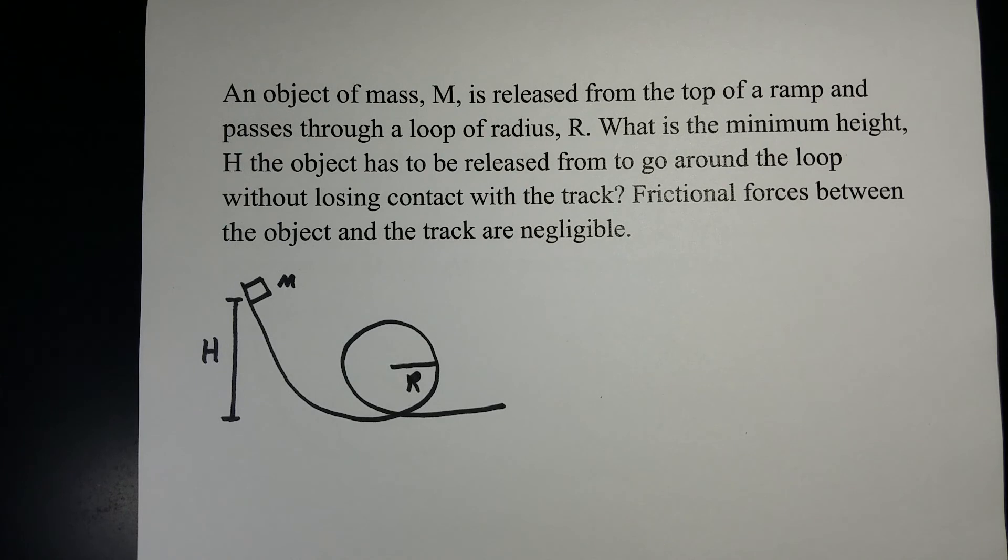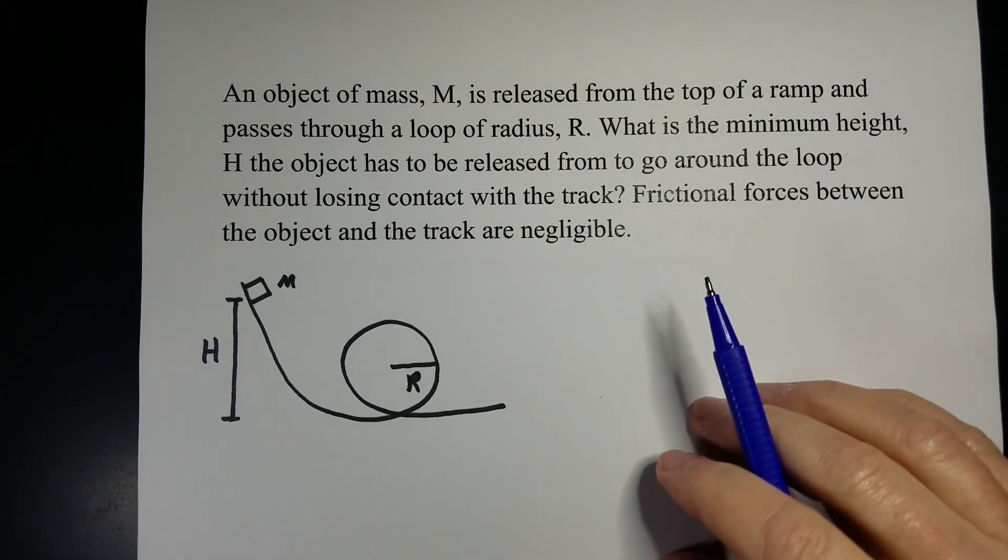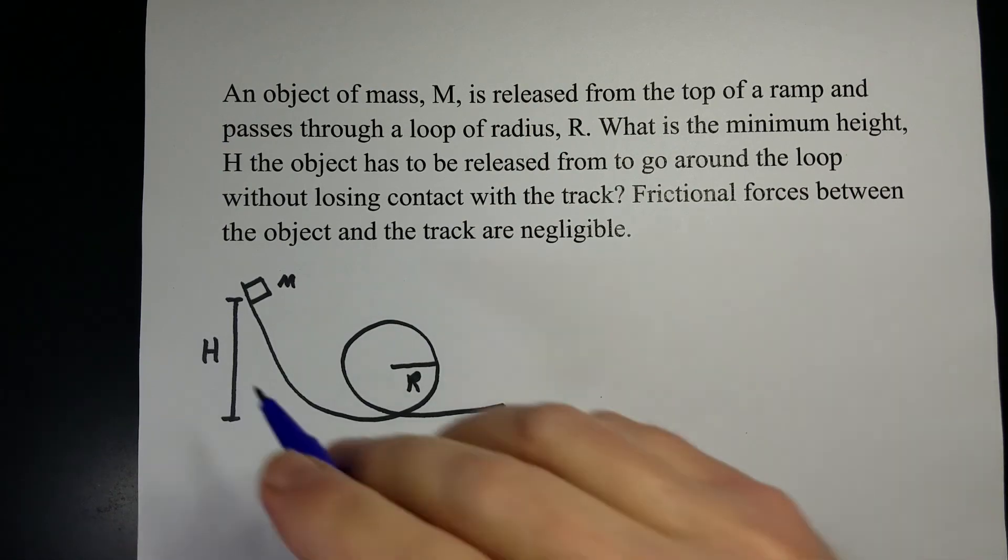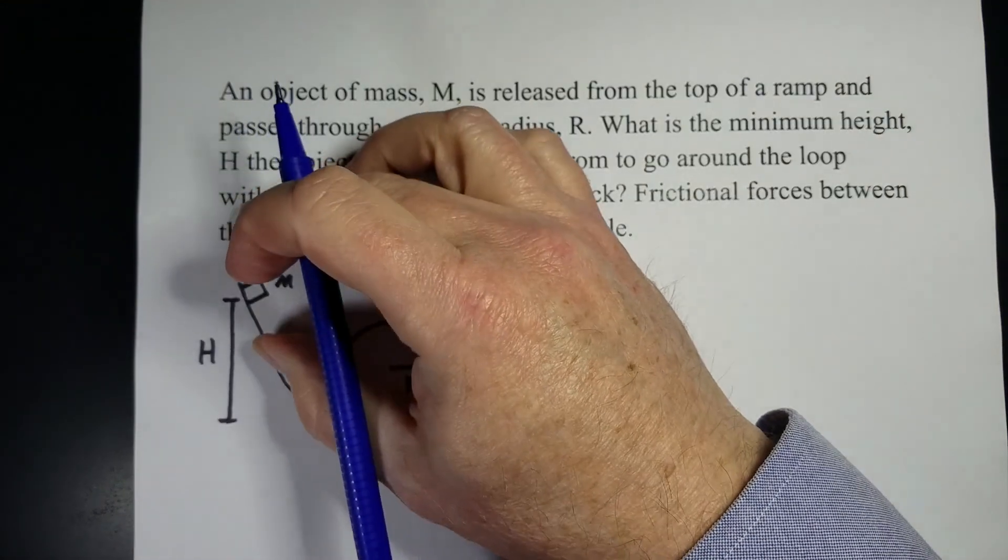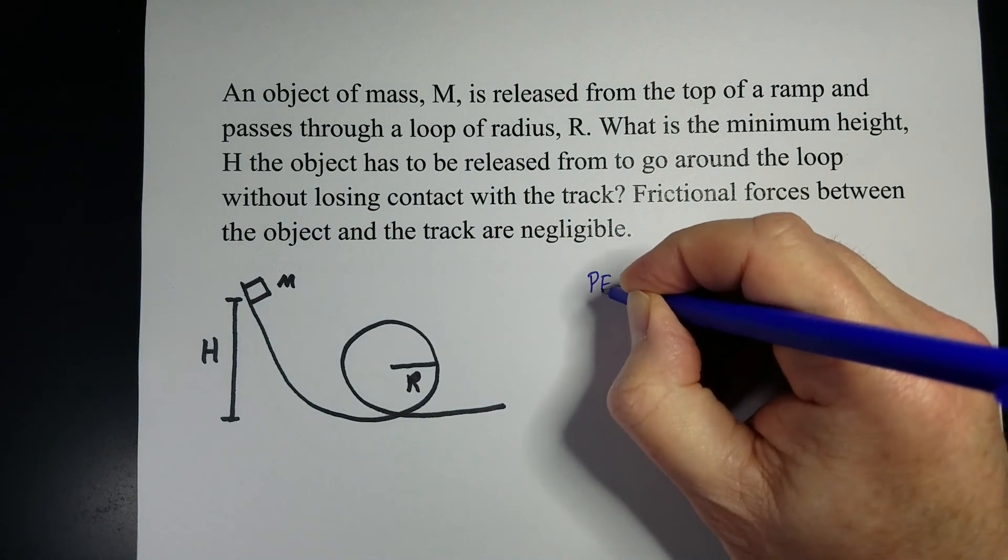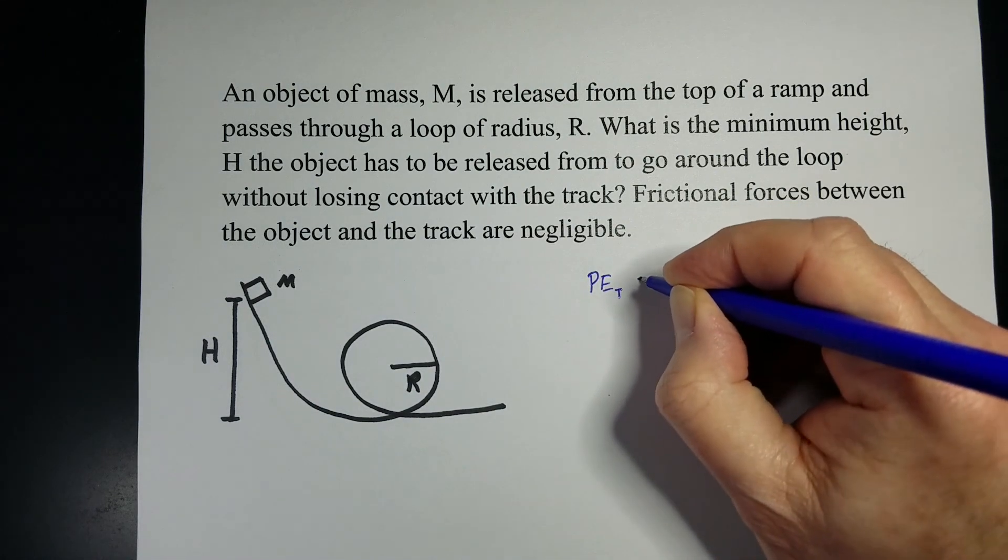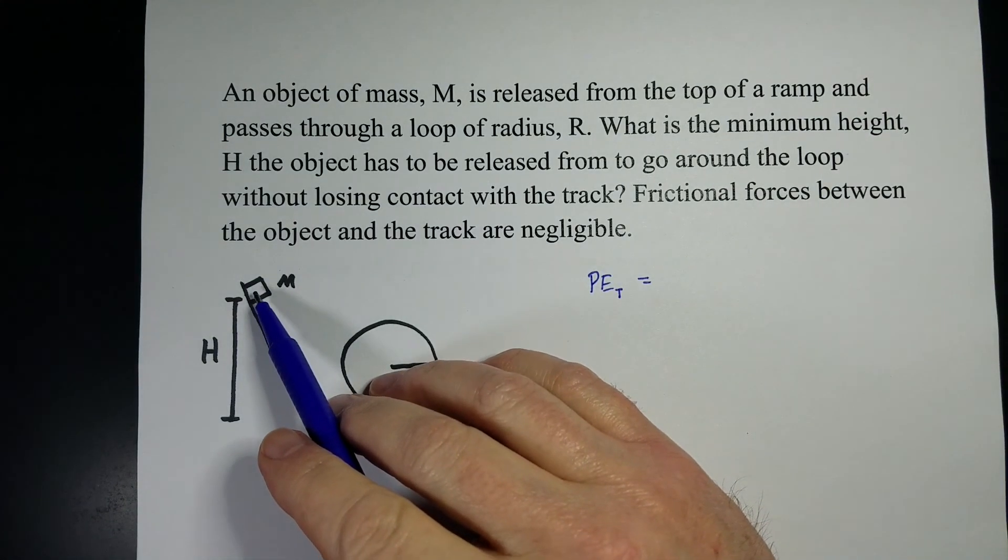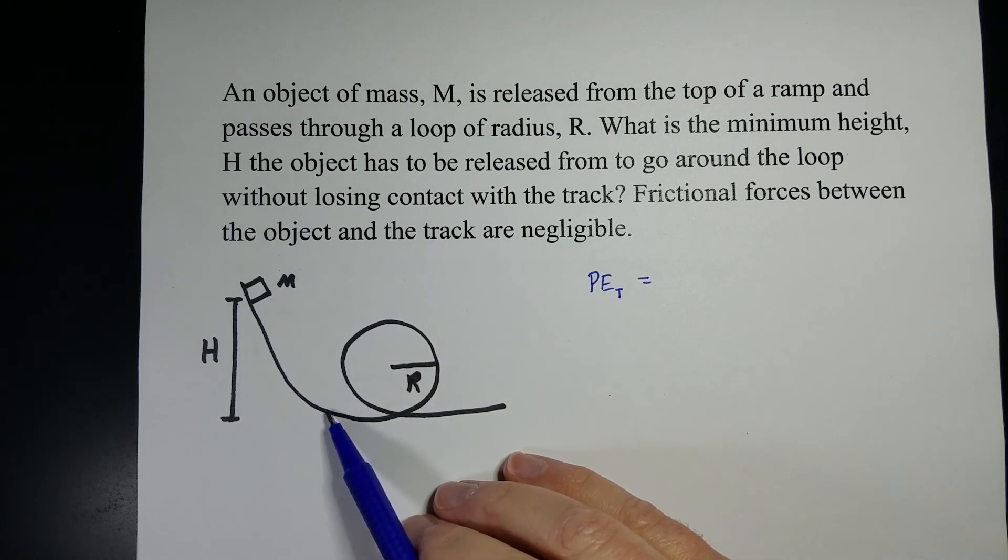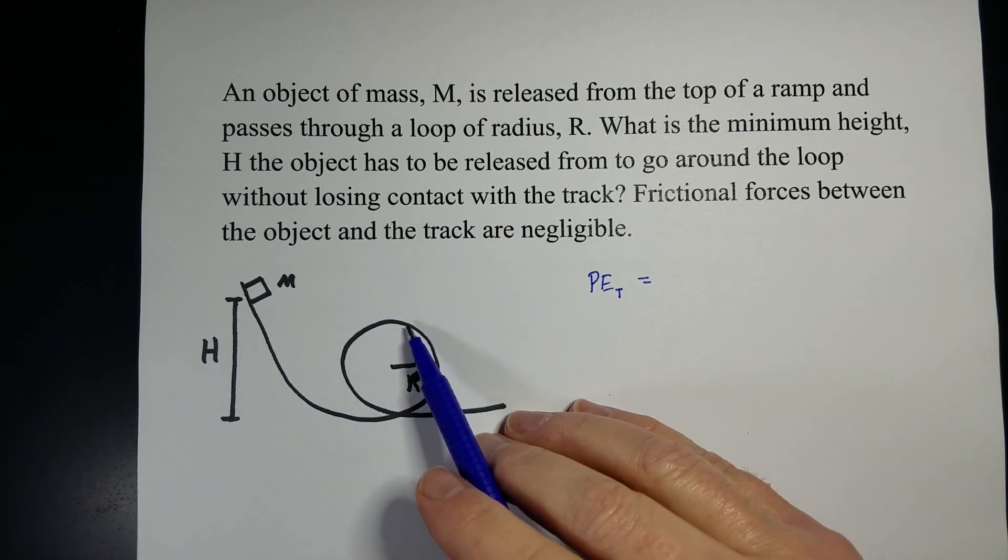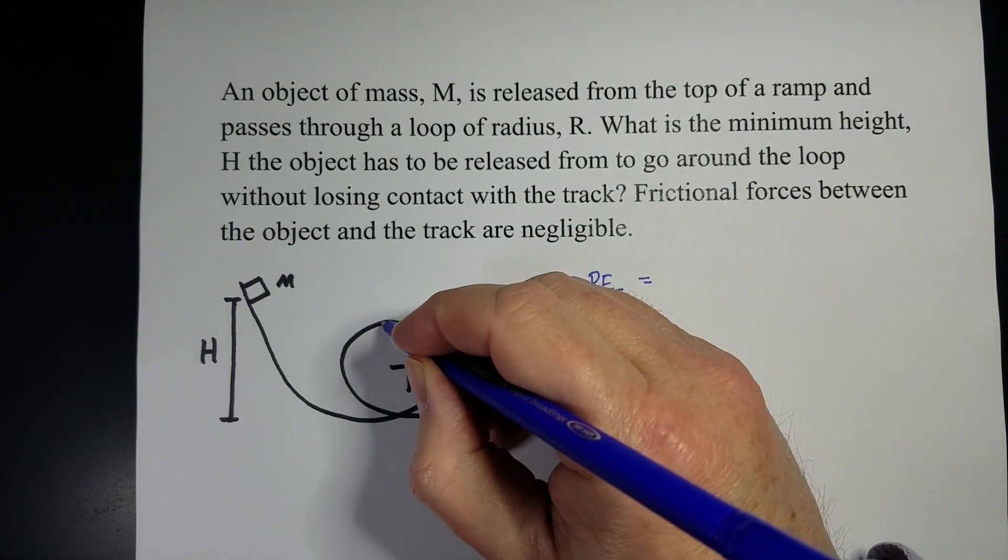So first of all, we need to set this up. Now this is basically a conservation of energy problem where at the top, if we release it from there, it just has potential energy at the top, no kinetic energy because we're just releasing it, that potential energy becomes kinetic energy as it goes down and then some of it turns back into potential energy as it goes up.